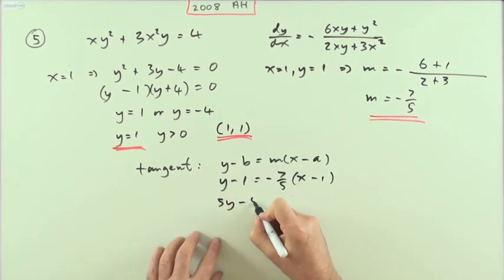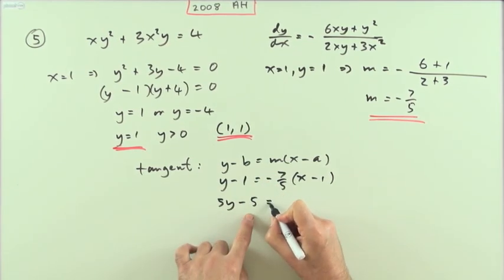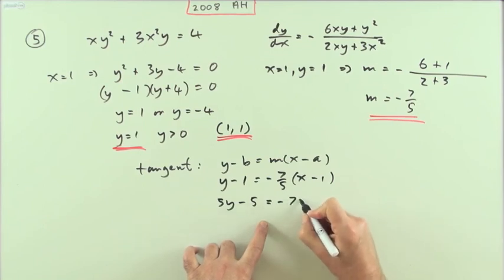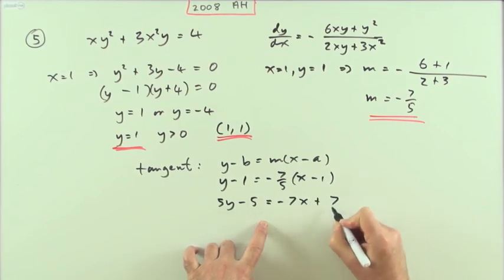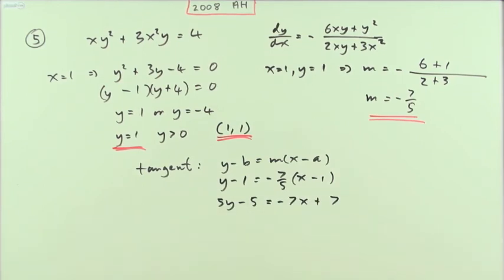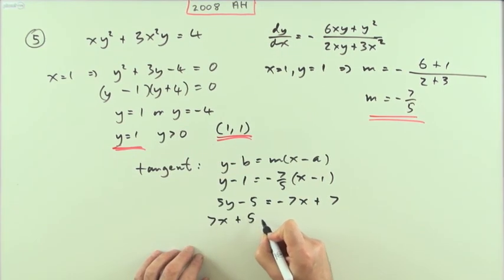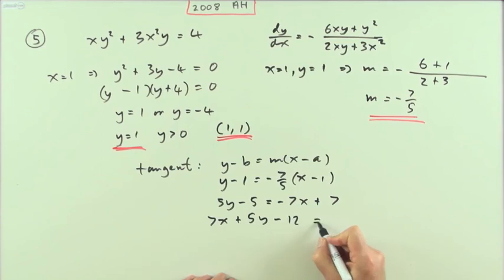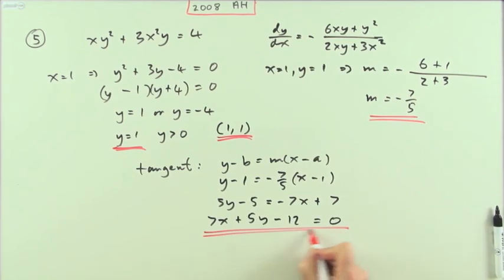So it'll be 5y, multiplying this side by the 5, 5y minus 5, leaving the negative 7 for that side, negative 7x plus 7. And then rearrange that into any form that you're happy with. Obviously these two numbers will have to go together in your final form. So just take all over to one side, 7x plus 5y minus 12 equals 0 would do for instance. There it is.